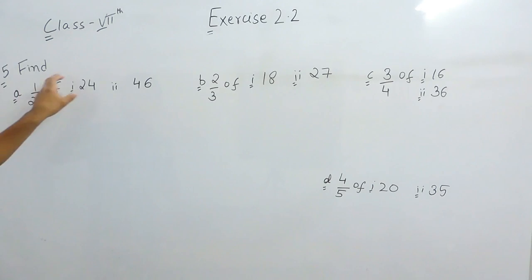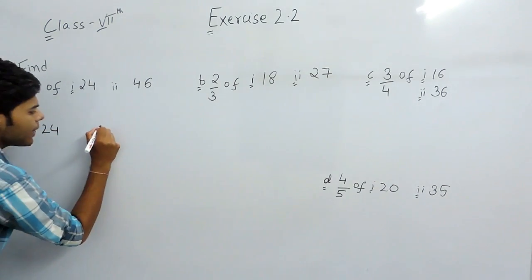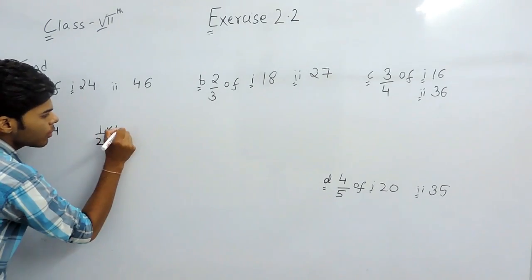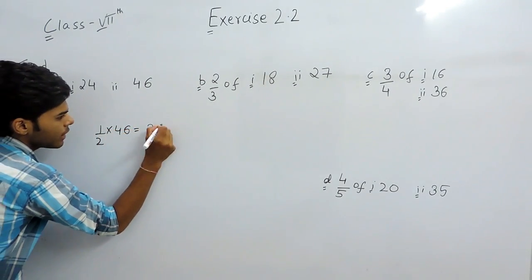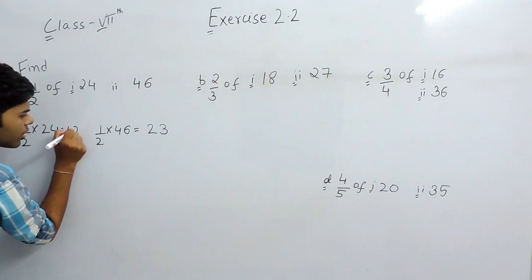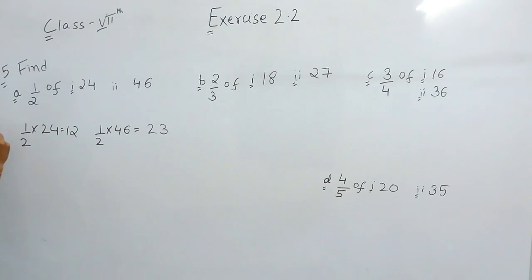This question can be done in many ways but we will follow some of them. The first is that of means multiply. We will simply multiply these numbers. First of all, we will multiply 24 with 1 upon 2 and then we will multiply 46 with 1 upon 2. That will be 23 and that will be 12. This is the first method.